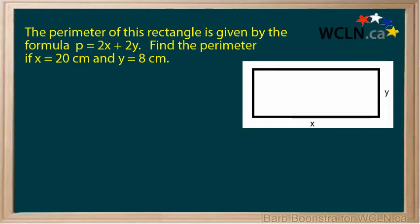The perimeter of a rectangle is given by the formula: perimeter equals 2x plus 2y. Your question here is to find the perimeter of this rectangle if x equals 20 centimeters and y equals 8 centimeters.